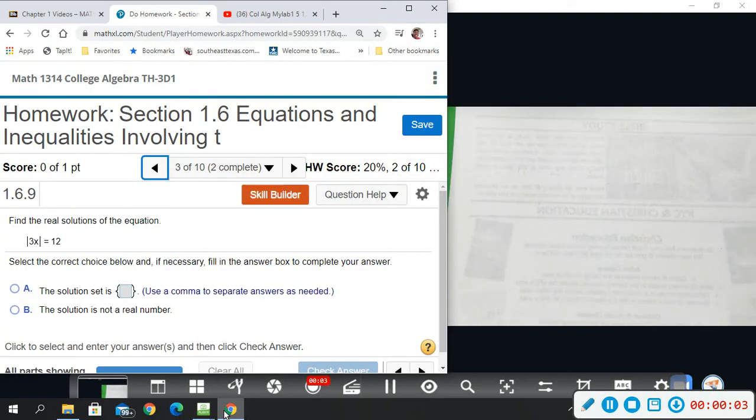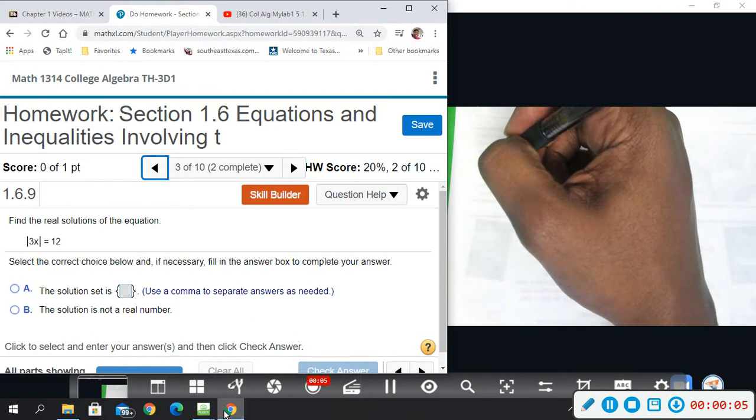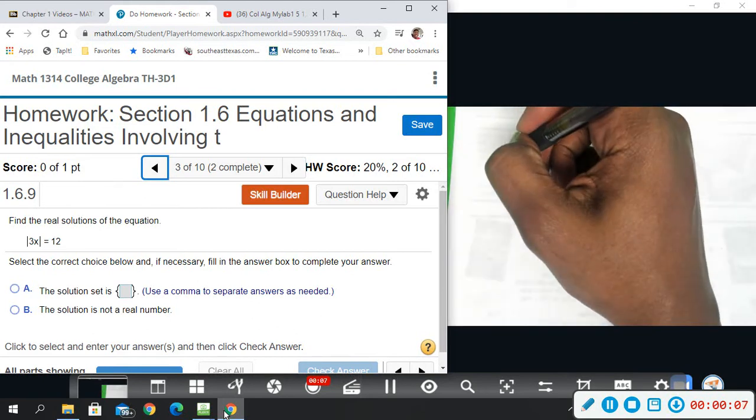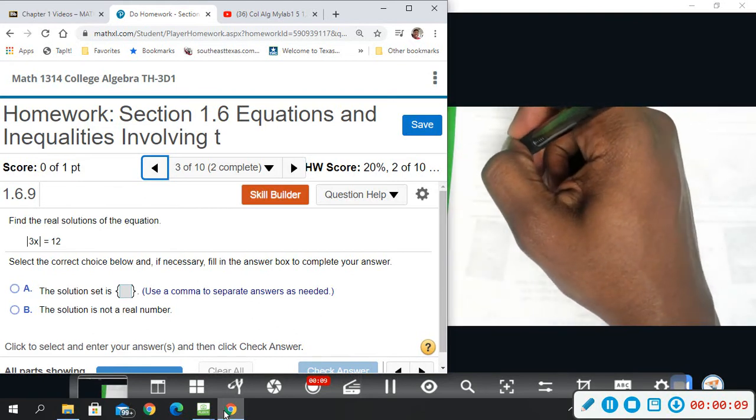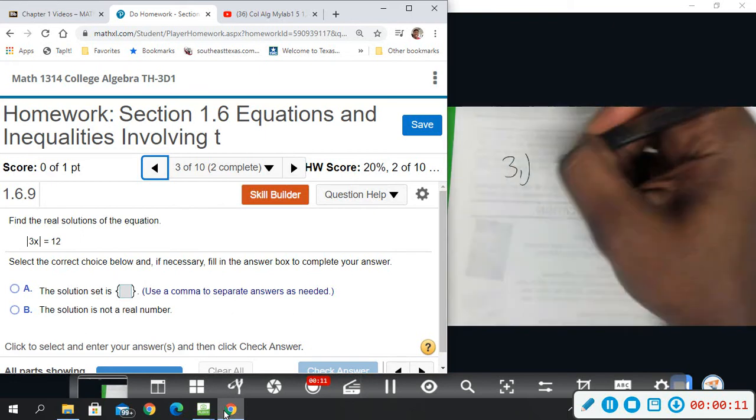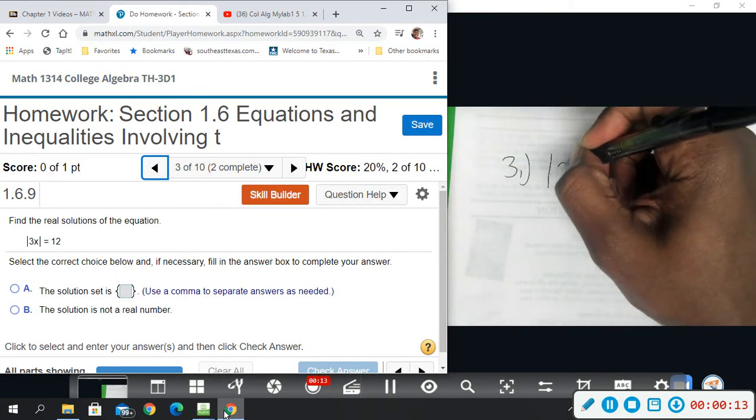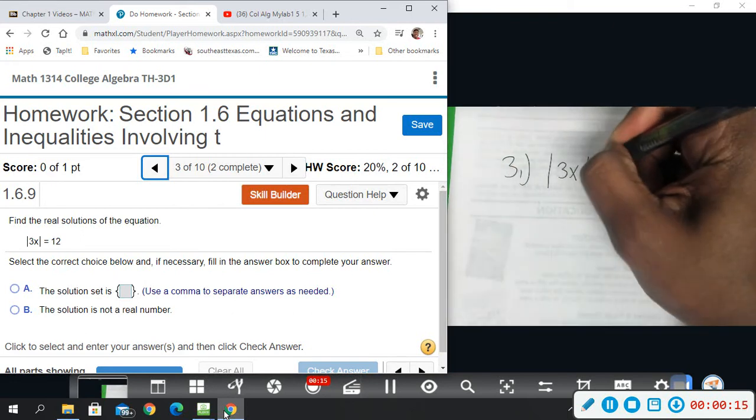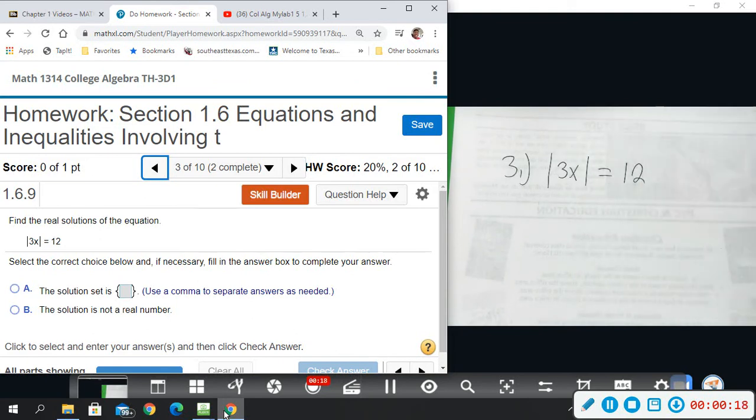Number three, we want to solve or find the real solutions to this equation: absolute value of 3x equals 12. When you have absolute value equations, you have to solve the problem twice.